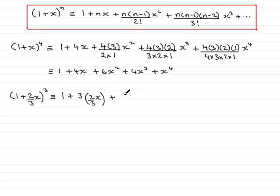Next term, the power 3, reduce it by 1, so that's down to 2. Multiply it by the x term, which is 2 thirds x, and square it. Don't forget as well, the 2 factorial, so we'll write that in there. 2 factorial then is 2 times 1.